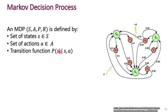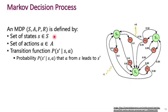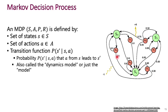The third element is the transition function, also called the state transition function or dynamics model. It specifies the probability of transitioning into a new state S-prime given that you're currently at state S and executing action A. For example, the transition probability P of S0 given S2, A1 equals 0.3 — you can read that directly off the diagram. This is also called the model of an environment.